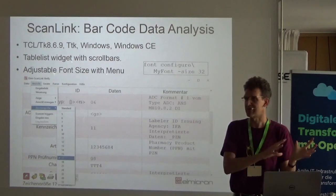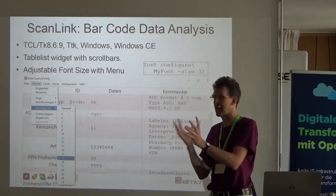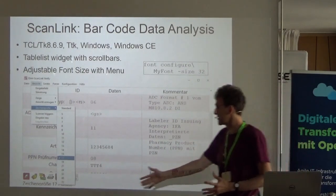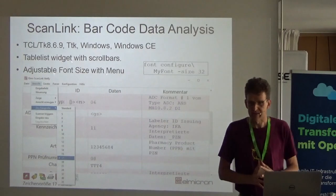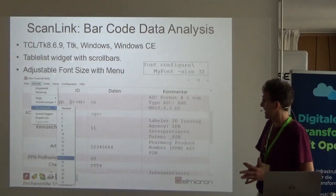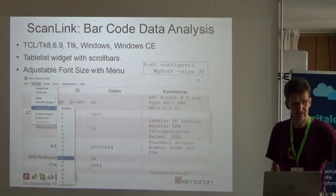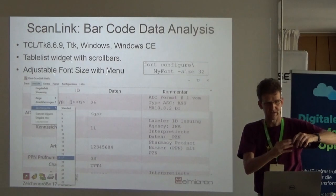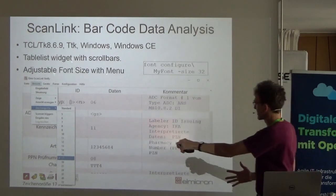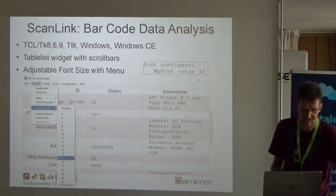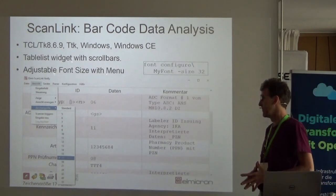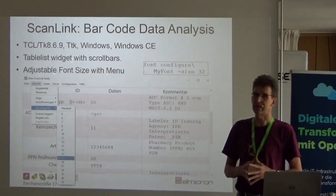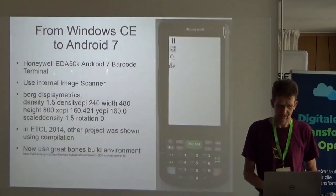You have file system differences — some files are different and you have to take care the app can be started and stopped. Screen resolution was already solved. And you have the barcode scanner. This device has its own barcode scanner in front — you press a button and it scans. Before in Windows CE, that was always a piece of C code. You have to put that barcode scanner on.